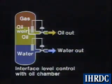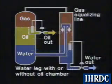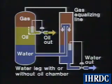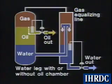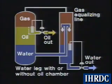The third method uses two weirs, which eliminate the need for an interface float. The interface level is controlled by the height of the external water weir relative to the oil weir or outlet height. This is similar to the bucket and weir design used for horizontal separators.